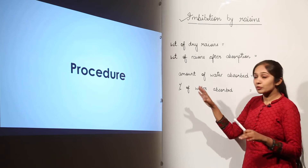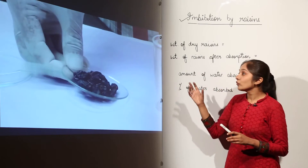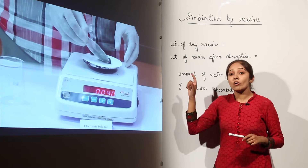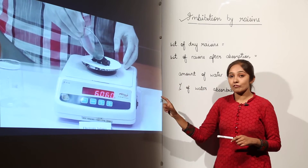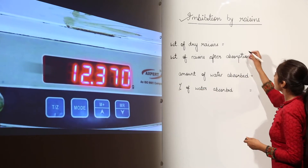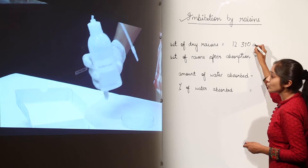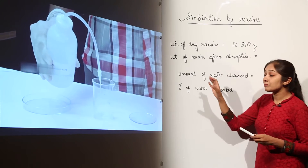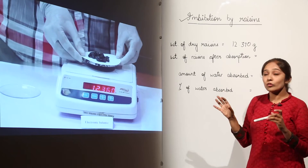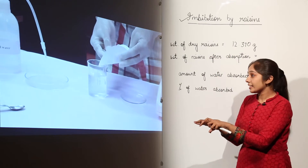For the procedure, take the raisins with intact stalks and weigh them on a weighing balance. The weight of the dry raisins — before putting them into water — comes out to be 12.370 grams. Now add some distilled water to the beaker and place the dry raisins into the beaker containing water.